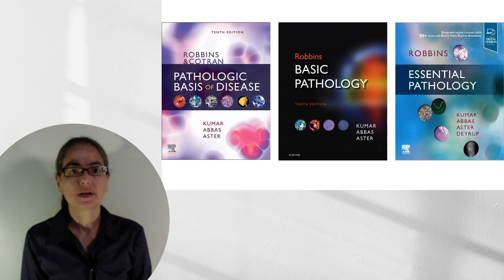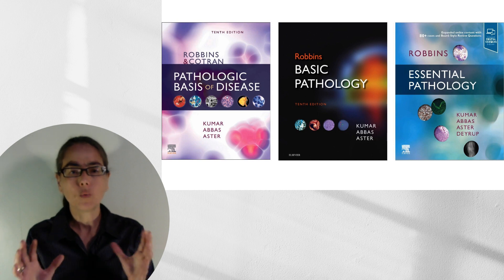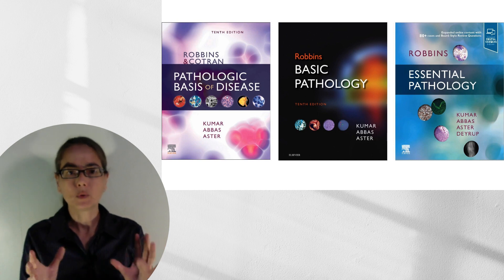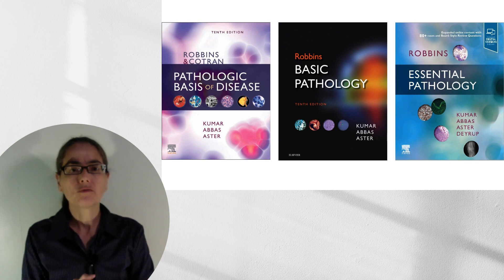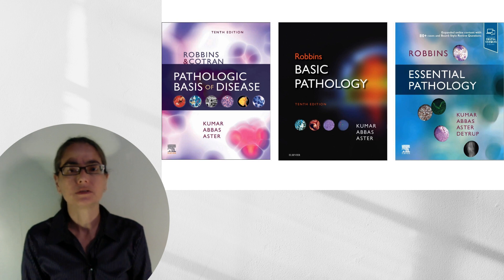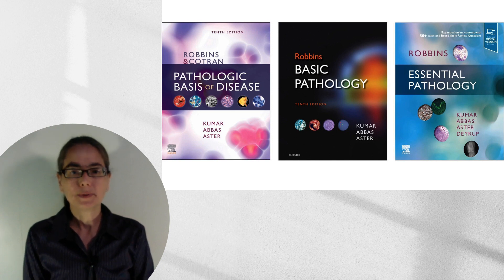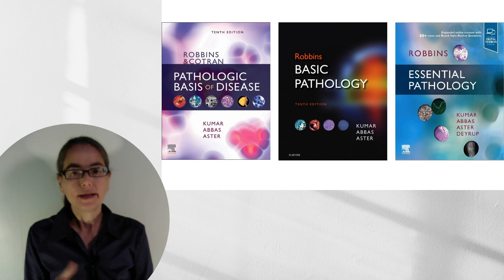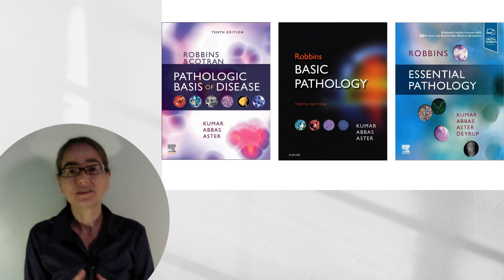I'm going to put this in the context of the Robbins family, just so you know where we came from and where we're going. We have Robbins and Cotran Pathologic Basis of Disease, which is about 1,350 pages of text and images. In the middle, we have Robbins Basic Pathology, about 850 pages. And finally, we have Robbins Essential Pathology, which comes in at less than 350 pages.